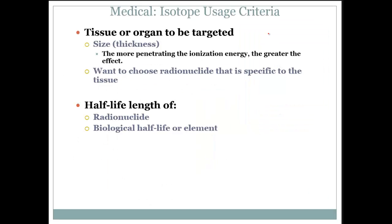For medical uses, we have discovered more and more ways to utilize radioisotopes. The first thing we want to do is look at the tissue or organ to be targeted. The size and thickness of the organ plays a big role in which one we choose. The more penetrating the ionization energy, the greater the effect. If it's something very soft and thin, we don't want to use something too powerful — we don't want to destroy the tissue altogether. We want to choose a radionuclide that's specific for that tissue. The half-life length for medical uses is far different than those chosen for minerals.